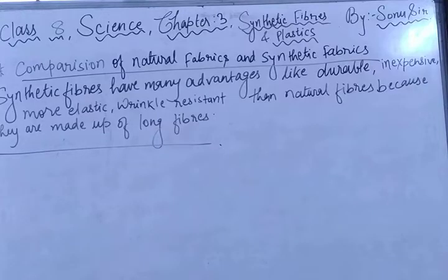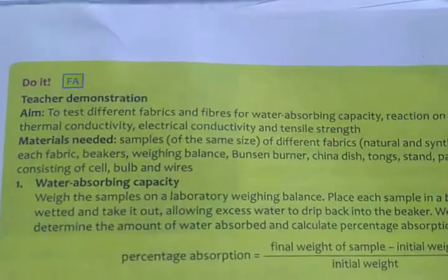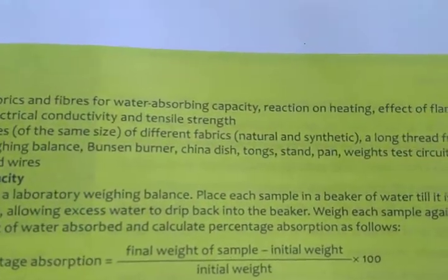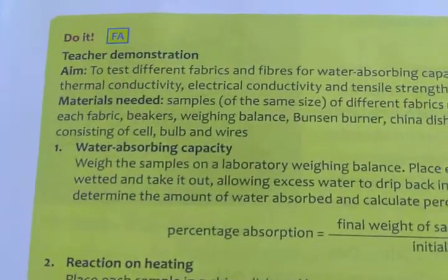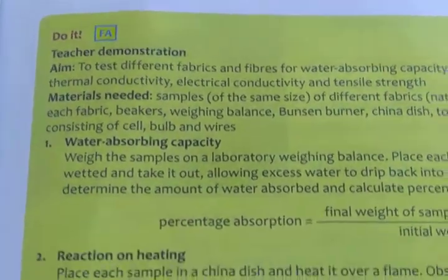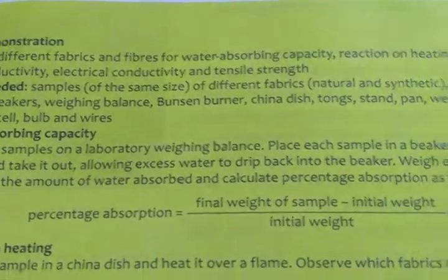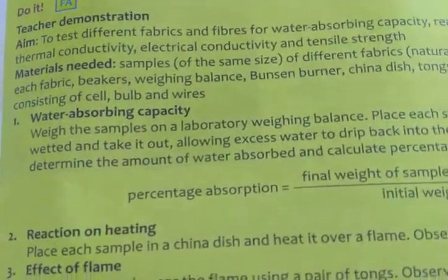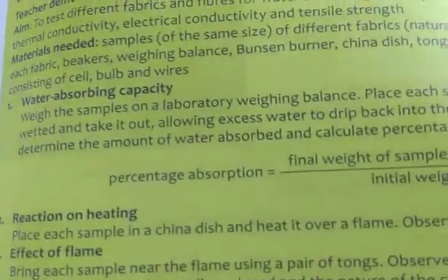Now there is one experiment. The aim is to test different fabrics and fibers for water absorbing capacity, reaction on heating, effect on flame, thermal conductivity, electrical conductivity, and tensile strength. The materials required are: samples of the same size of different fabrics — natural and synthetic — a long thread from each fabric, beakers, a weighing balance, a Bunsen burner, china dish, tongs, stand, pan, weights, and a test circuit.